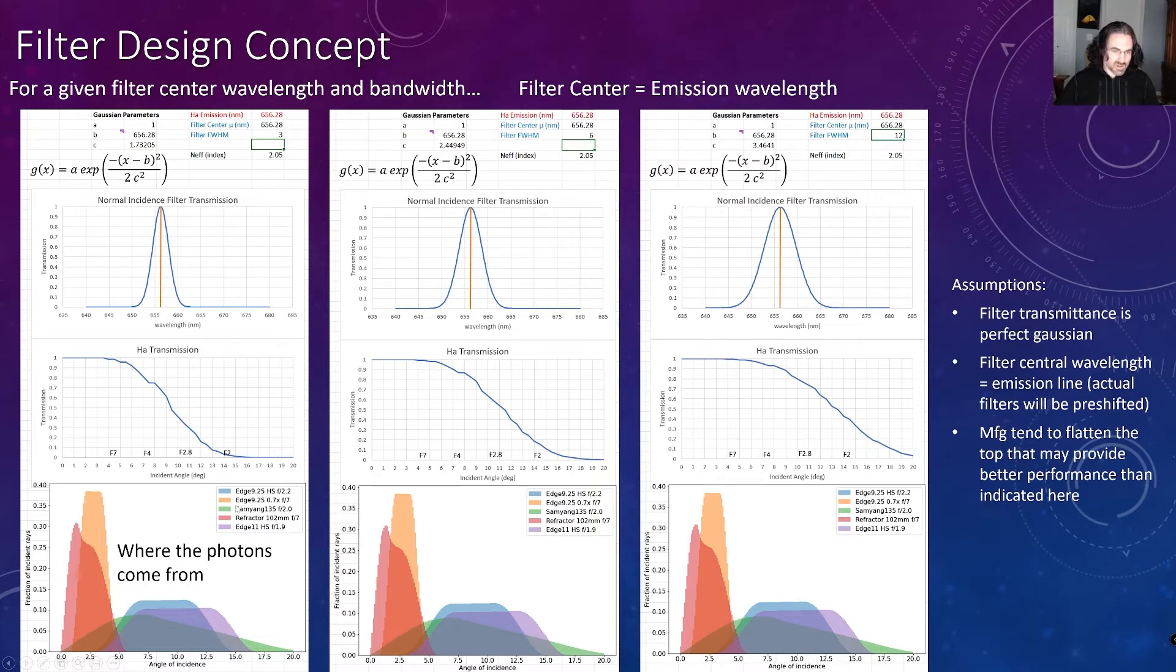As we move on to the next optic that's in here, I have a Samyang 135 millimeter camera lens that shoots at F2. Here we can see that we have incident angles that span from zero all the way out through 20 degrees, peaking out around five. So again, putting this in line with our transmission, we're going to start attenuating signal very quickly from most of the photons that this lens is collecting. And that's going to have the effect of stopping down this lens so it's not actually operating at F2, but something closer to like F2.5.